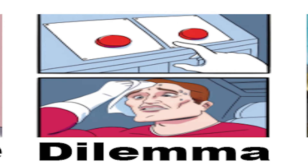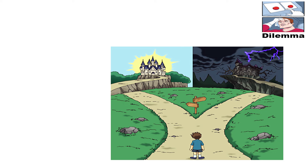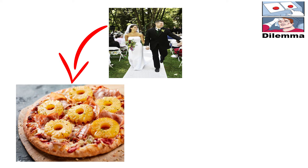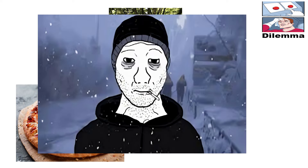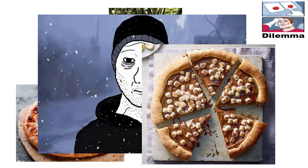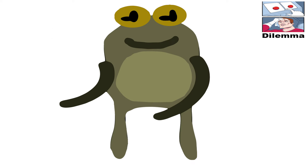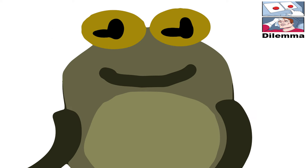False dilemma. A false dilemma presents only two options when, in reality, there exist other options. For example, saying either you marry someone who loves pineapple on pizza, or you'll be single forever — ignoring that other people can like chocolate on pizza that you can marry. Even though you shouldn't marry someone who puts pineapple on pizza, because they clearly suck.